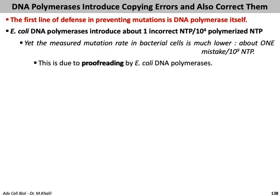The first line of defense against mutation is DNA polymerase itself. E. coli DNA polymerase introduces about one incorrect nucleotide every 10,000 polymerized nucleotides, yet the measured mutation rate in bacterial cells is much lower — about one in a billion nucleotides. This correction is called proofreading, performed by the DNA polymerase itself.